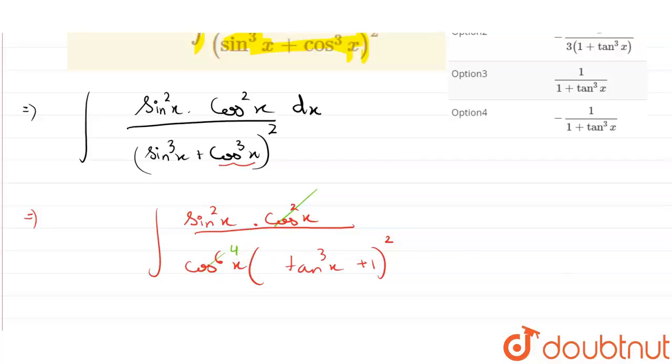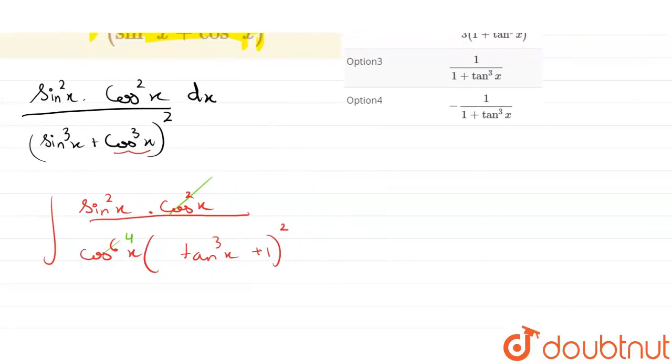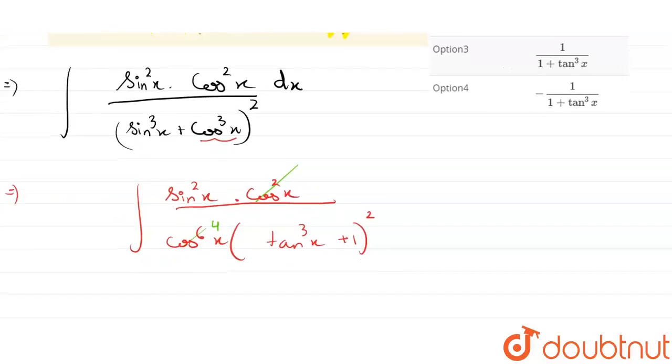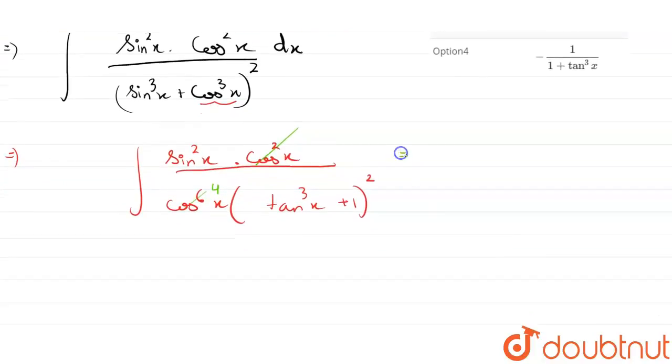So what we will get here is tan²x·sec²x divided by (1 + tan³x)² dx integration.